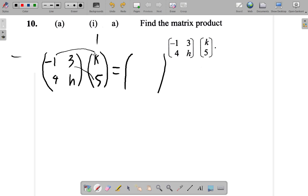Row 1, column 1 is negative 1 times K plus 3 times 5. First element in row 1 times first in column 1 multiplied, plus second in row 1 times second in column 1 multiplied. So it's row by column, the firsts multiplied plus the seconds multiplied. So negative 1 by K is negative K, plus the seconds, 3 by 5 is 15.